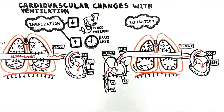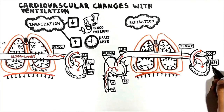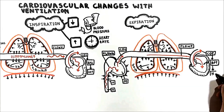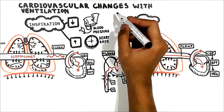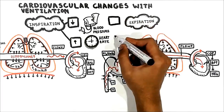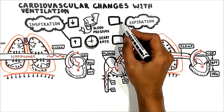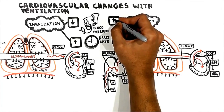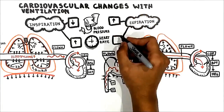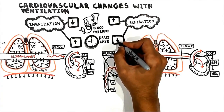Momentarily increasing the blood pressure increases the vagal tone to the heart, causing a transient decrease in heart rate. To sum it up, during expiration the blood pressure increases and heart rate decreases.